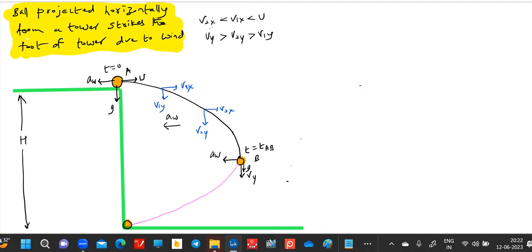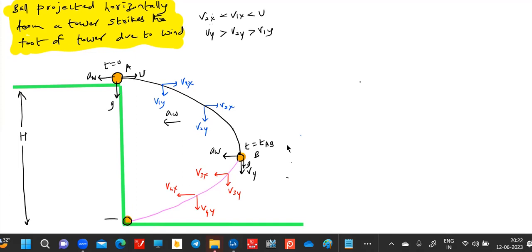How the velocities will be? Again it will have v3y, v3x, v4y. And finally it will strike the tower. Let the condition be Vx and let this be Vy.